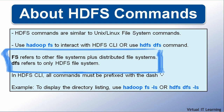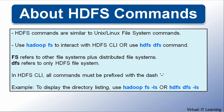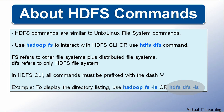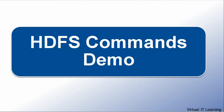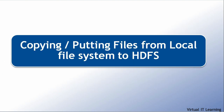In this demo we will mainly use the 'hadoop fs' command. Another point to note is that while using the FS shell commands, all commands must be prefixed with a dash. For example, to get a directory listing from HDFS you can use the command 'hadoop fs -ls' or 'hdfs dfs -ls'. Note the dash prefixed with the ls command.